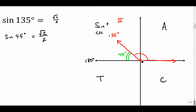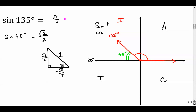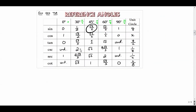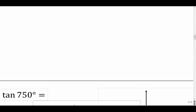We'll use that value but be careful about the sign. 'All Students Take Calculus' — in quadrant two, sine and cosecant are positive, so the answer is positive radical two over two. If you draw the reference triangle: hypotenuse is 1, the x-coordinate is negative radical two over two, the y-coordinate is radical two over two. Sine is opposite over hypotenuse: radical two over two divided by one — positive.